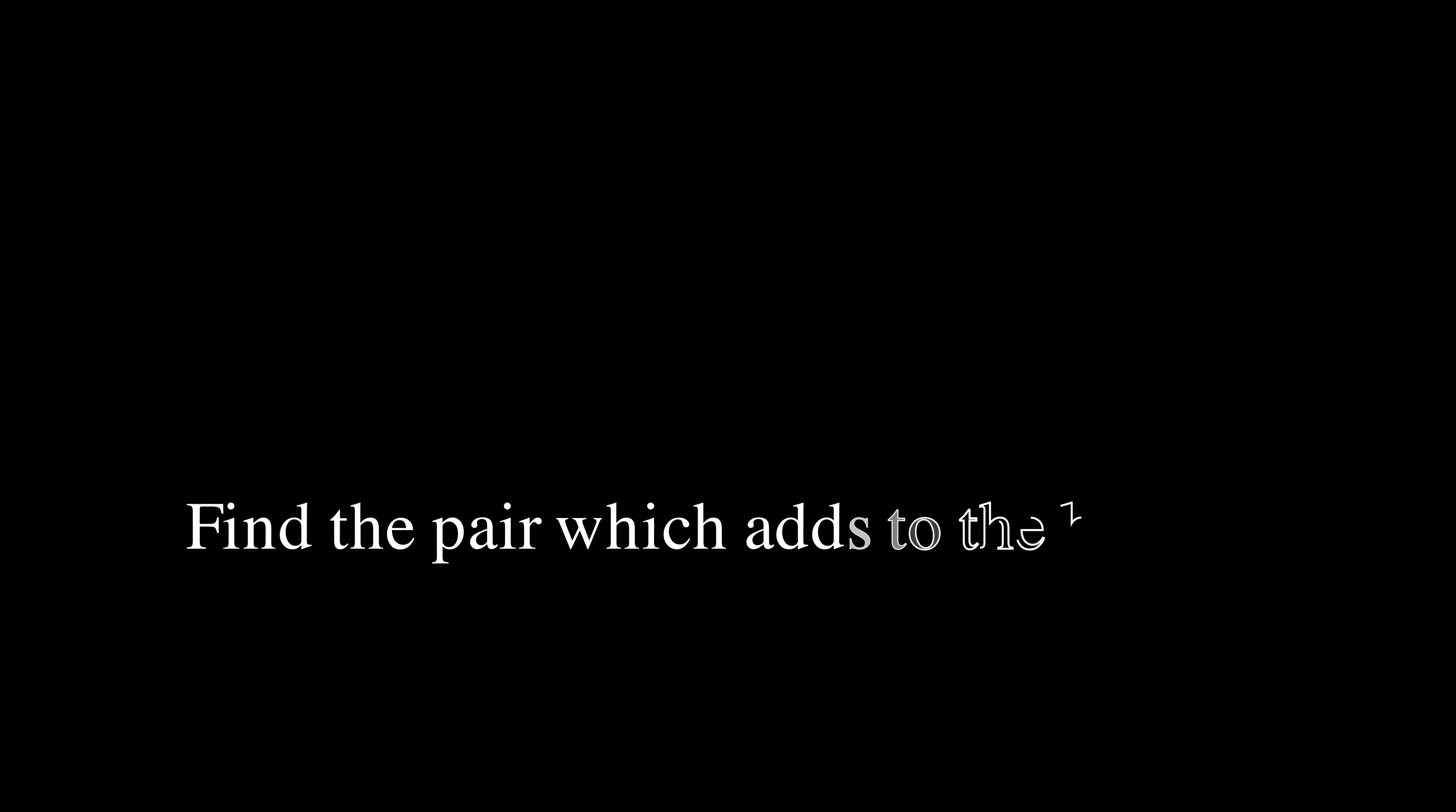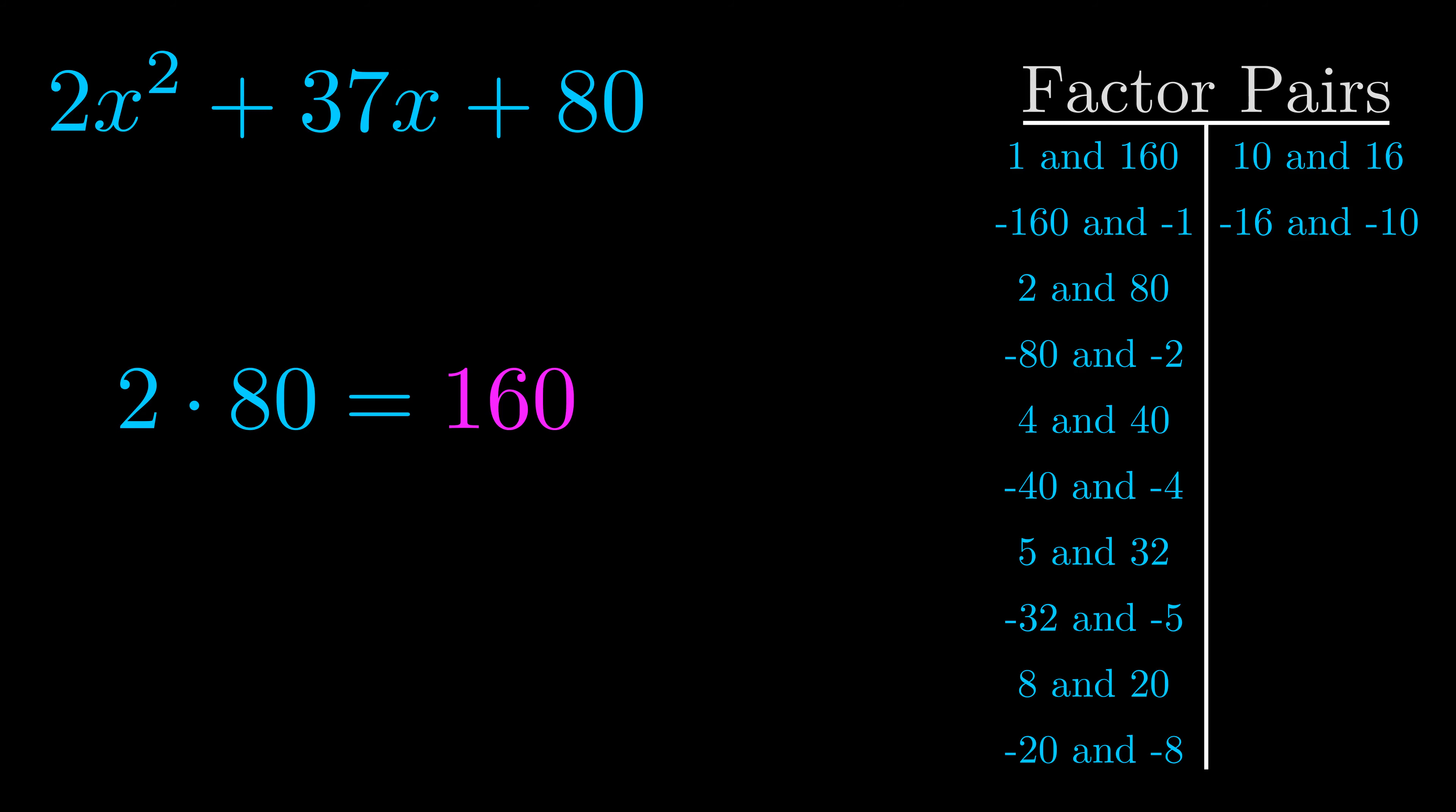The b value is the coefficient on the x term. That's the middle term, the one that we haven't done anything with yet. And really this is the only factor pair that we need.